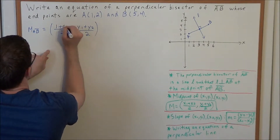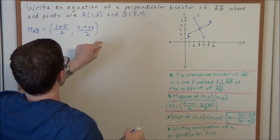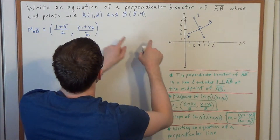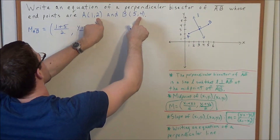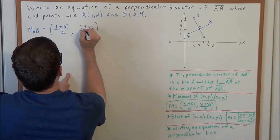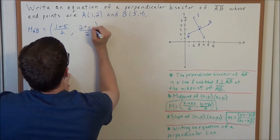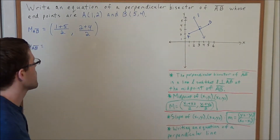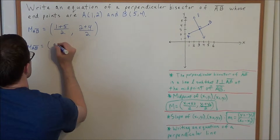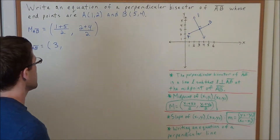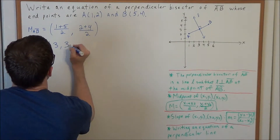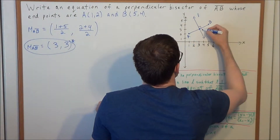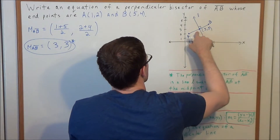So we're looking at 1 plus 5 divided by 2. Next, for the y-coordinates, we need to substitute in for y1 and y2. The y-coordinates for these points are 2 and 4, so we're going to substitute 2 and 4 for y1 and y2. When we simplify, the midpoint is (1+5)/2 = 6/2 = 3 for the x-coordinate, and (2+4)/2 = 6/2 = 3 for the y-coordinate. So the midpoint of line segment AB is (3, 3).